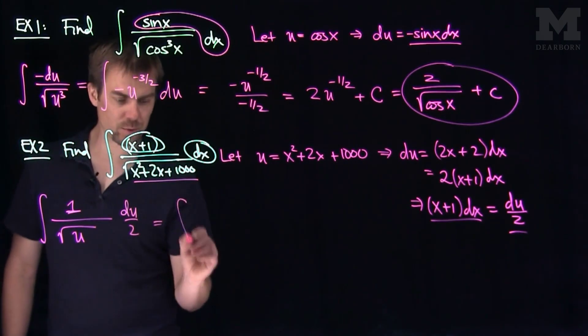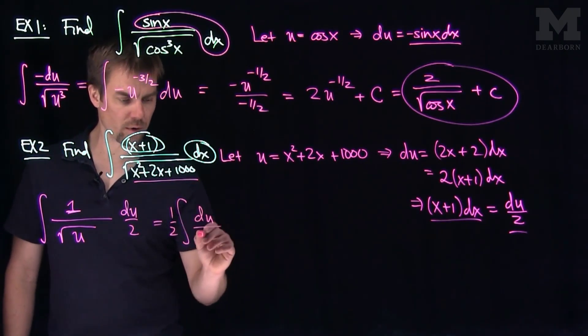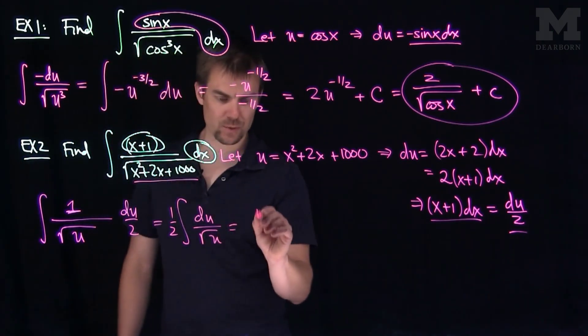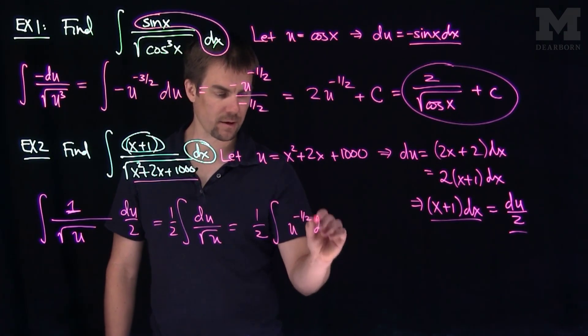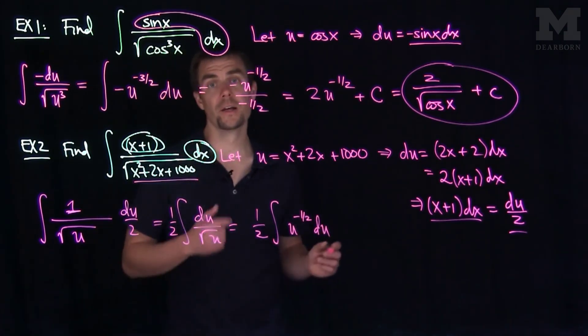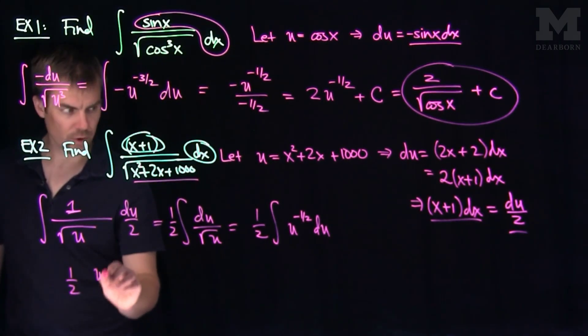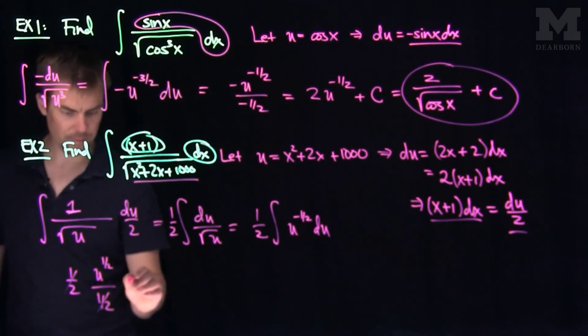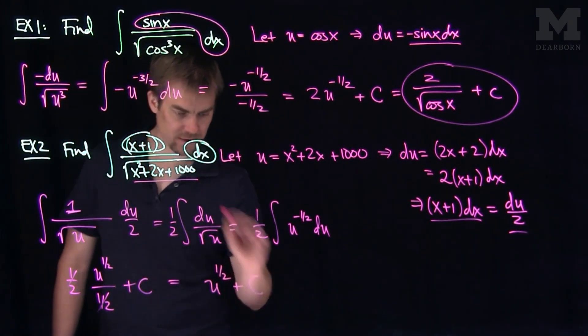So if we simplify this, we just have the 1 half, then we have the du over root u, which we'll write in power form as 1 half integral of u to negative 1 half du. Then we raise the power divided by the power. So I have a 1 half, then I have u to the 1 half over 1 half, so the 1 half's will cancel out, plus a constant c. And so this is just going to be u to the 1 half plus c.